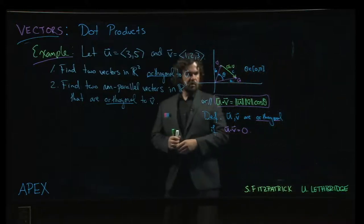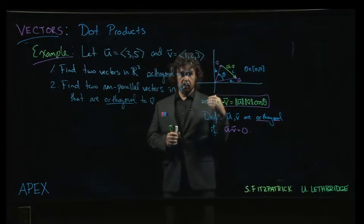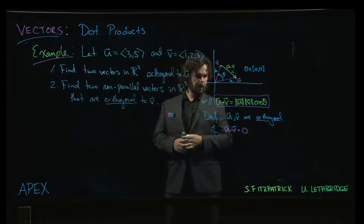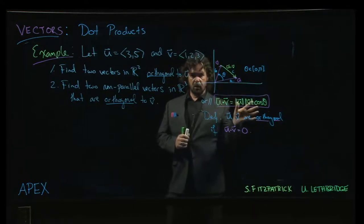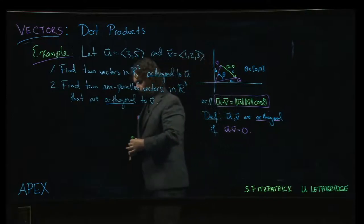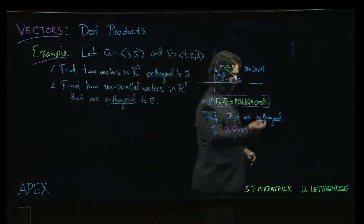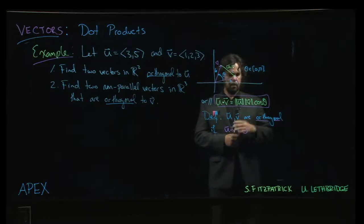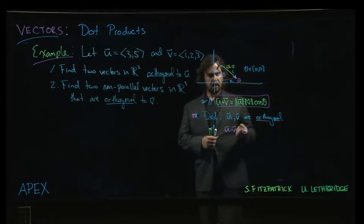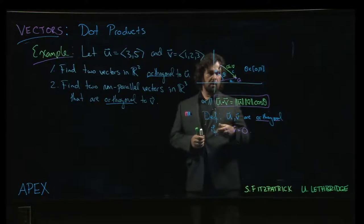In the previous video we saw how to use the geometric formula for the dot product to compute angles between vectors with the assistance of a calculator once you know what cosine of the angle is. That led to us noticing that in one case the dot product was zero.